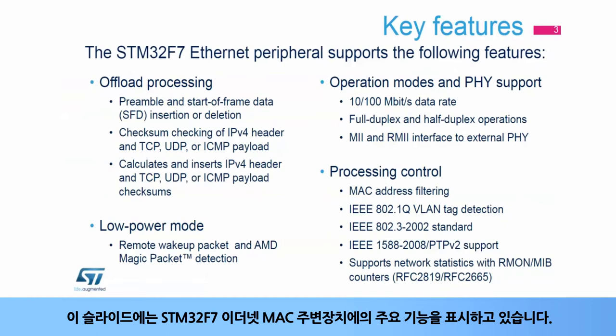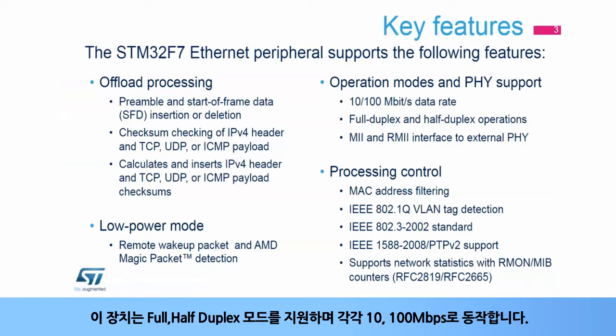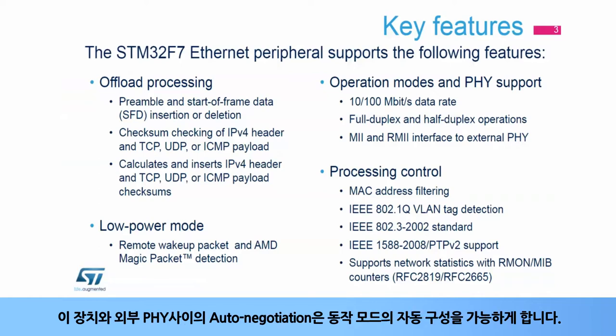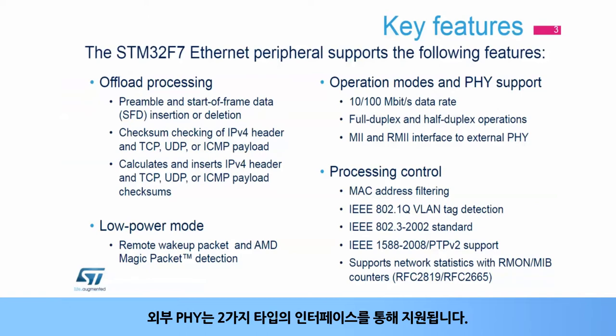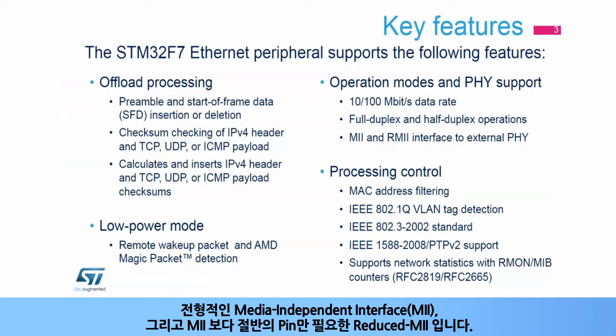The key features of the STM32F7 Ethernet MAC peripheral are presented in this slide. The peripheral supports both full and half-duplex modes of operation at either 10 or 100 megabits per second. Auto-negotiation between the peripheral and the external PHY enables automatic configuration of the operation mode. The external PHY is supported through two interface types: the typical media-independent interface, or MII, and the reduced MII that needs half as many pins as the MII.